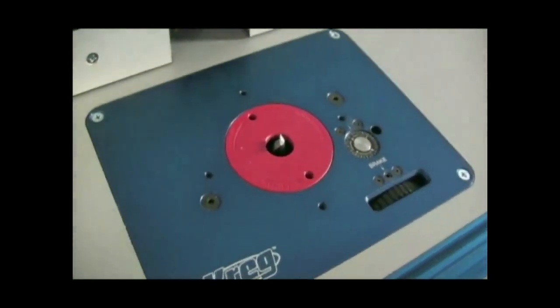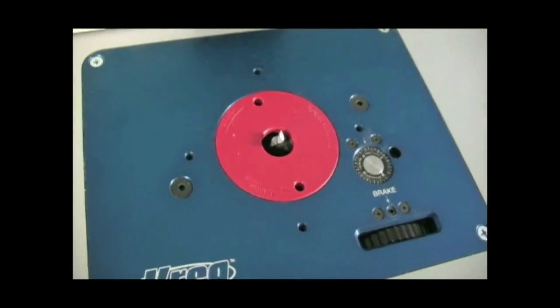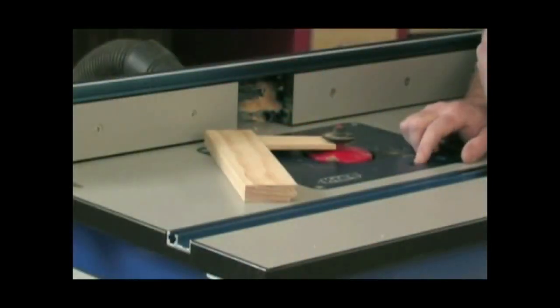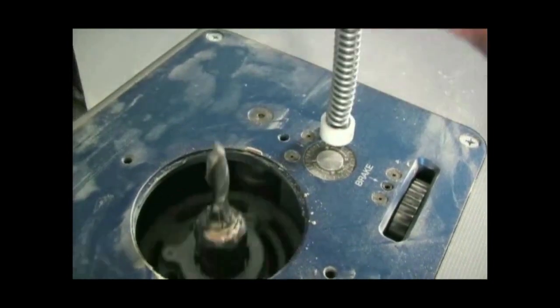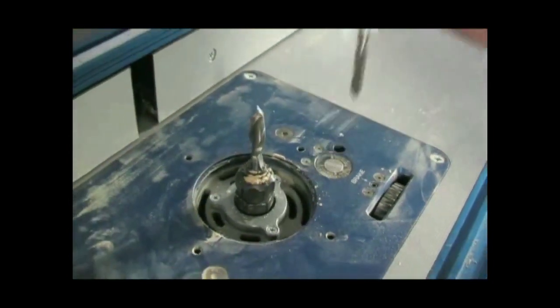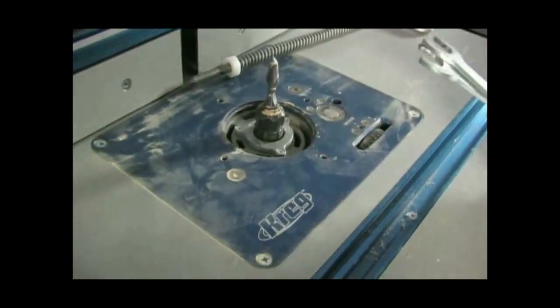The Craig Precision Router Table eliminates that hassle by letting you make adjustments and bit changes above the router table. No need to reach under the table or lift the router out. Everything is within easy reach for fast, accurate adjustments.